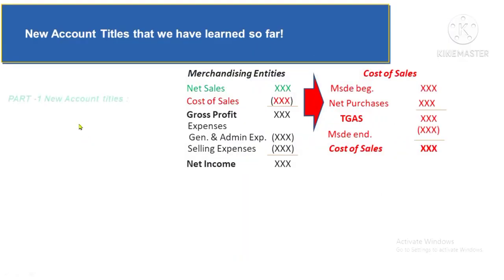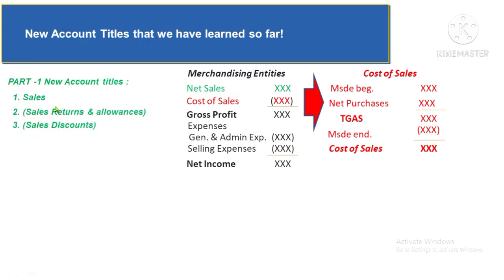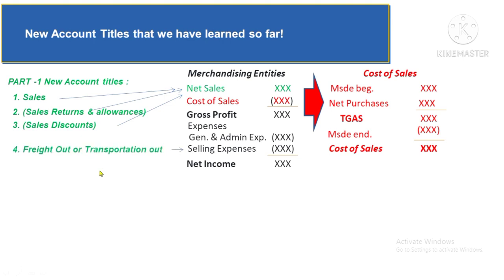Before we start, let's review the new account titles learned so far. In Accounting for Merchandising Part 1, we learned about entries related to Sales, Sales Returns and Allowances, and Sales Discounts. These three compose the net sales, because net sales equals gross sales less Sales Returns and Allowances and Sales Discounts. We also learned how to account for freight out — the transportation cost incurred to deliver goods to customers — which is a selling expense.